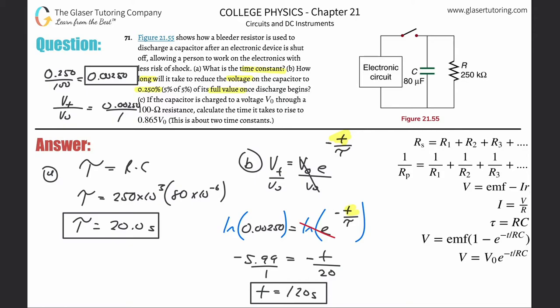Letter C: If the capacitor is charged to a voltage of VO through a 100 ohm resistance, calculate the time it takes to rise to 0.650 of its initial. Now it's talking about charging, so we can't use this formula anymore. We've got to use the other formula for charging.